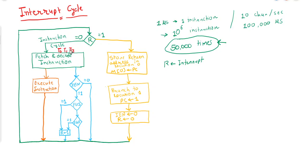Timing signals T0, T1, and T2 are used for fetching and decoding the instruction. At T3, the CPU will execute the instruction. While the CPU is executing the instruction, it will also check whether the interrupt is enabled or not — so in parallel to execution, the CPU handles this interrupt check.